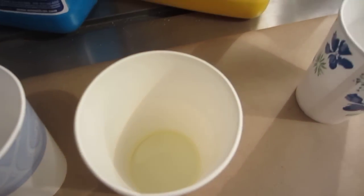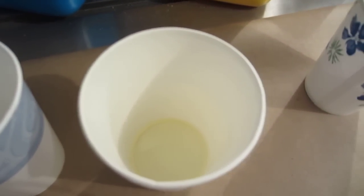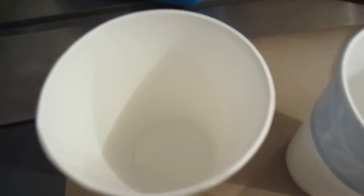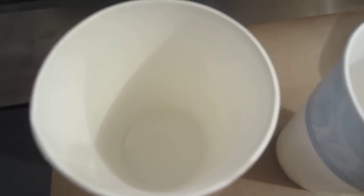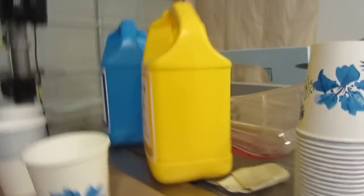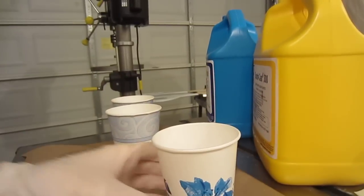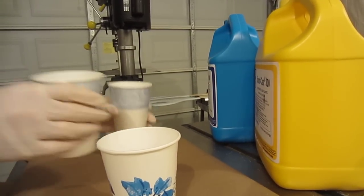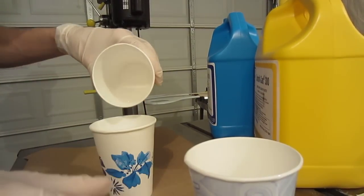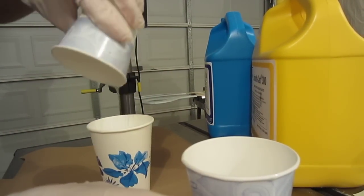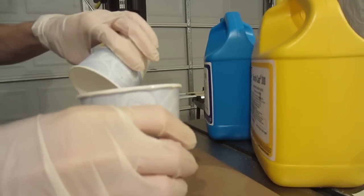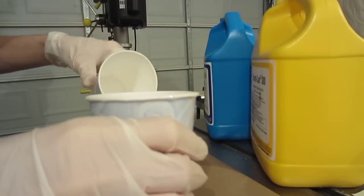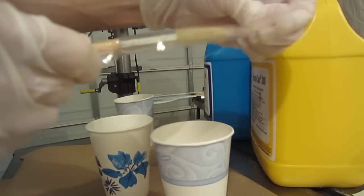So just a teeny tiny bit of the part A which is yellowish liquid and a teeny tiny bit of part B which is a clear, thicker liquid. I'm just going to pour my part B in. Get my brush ready.